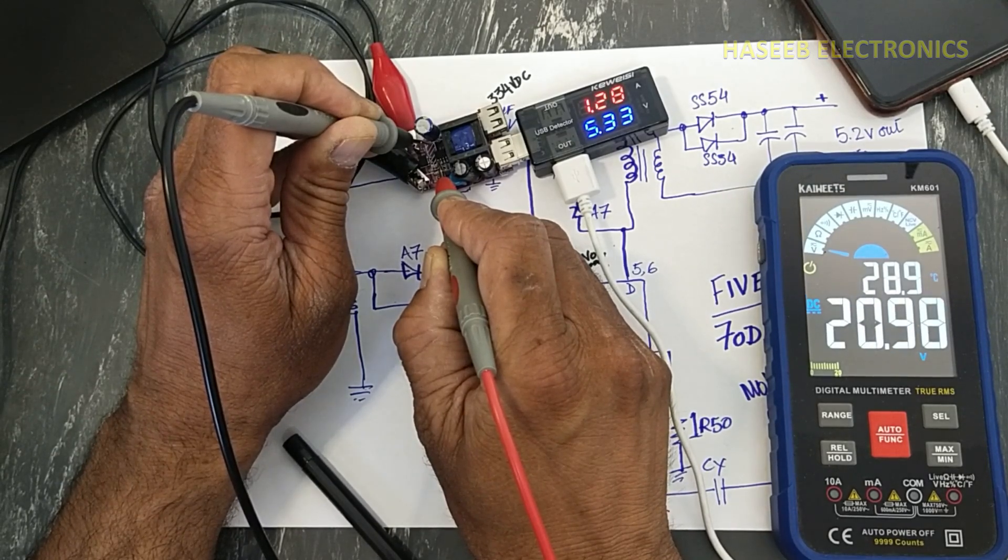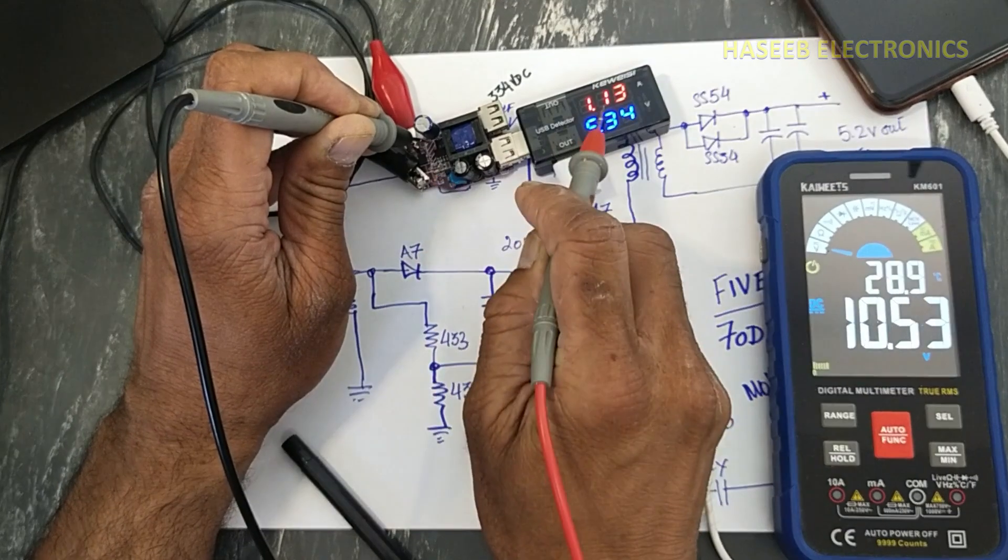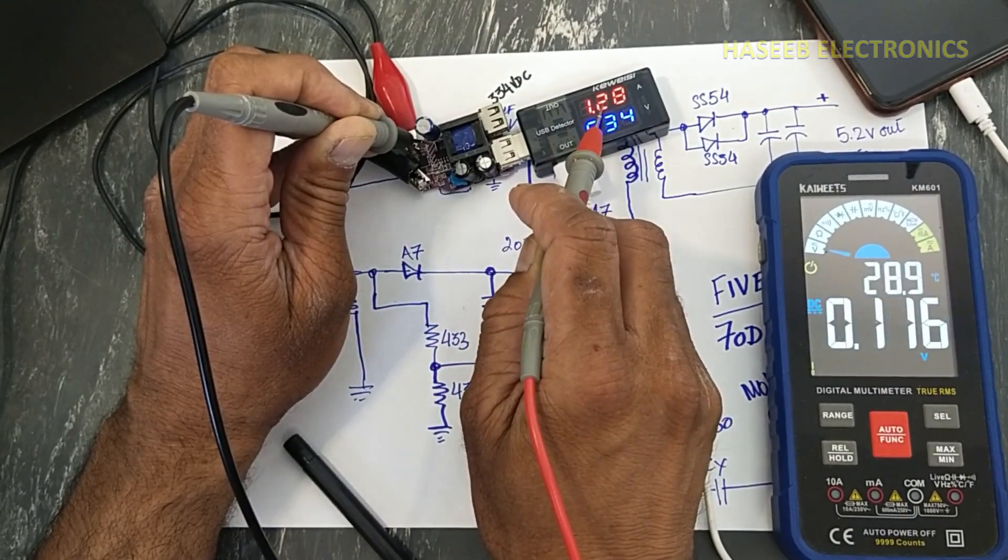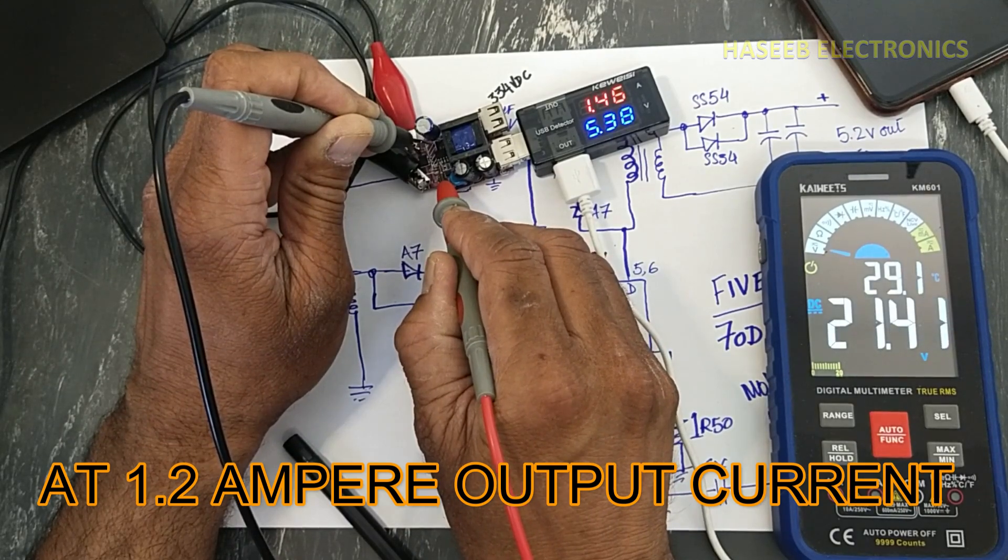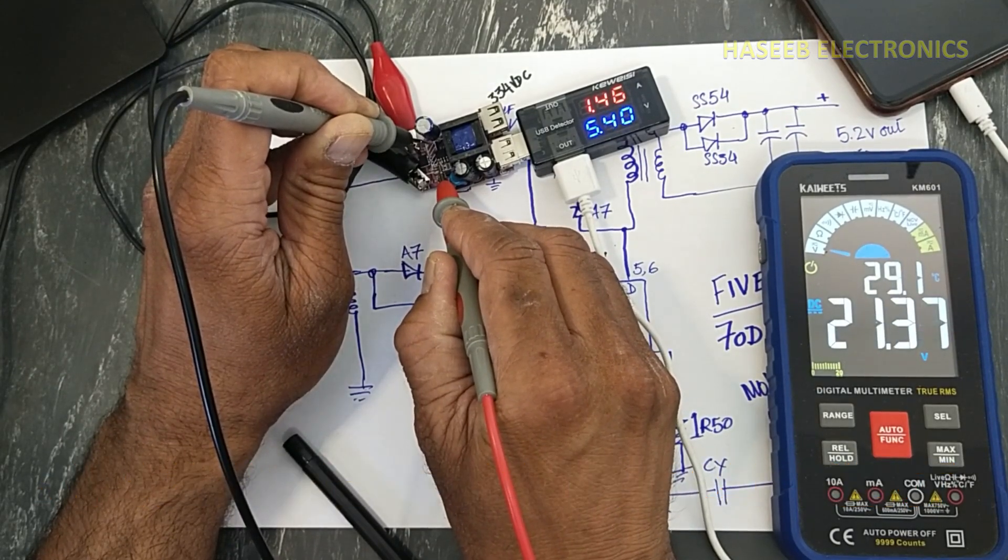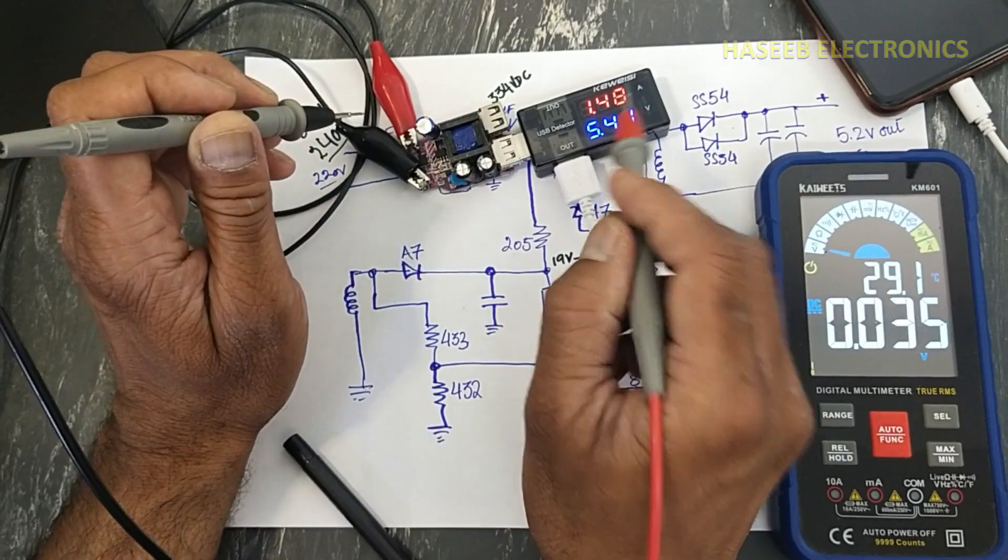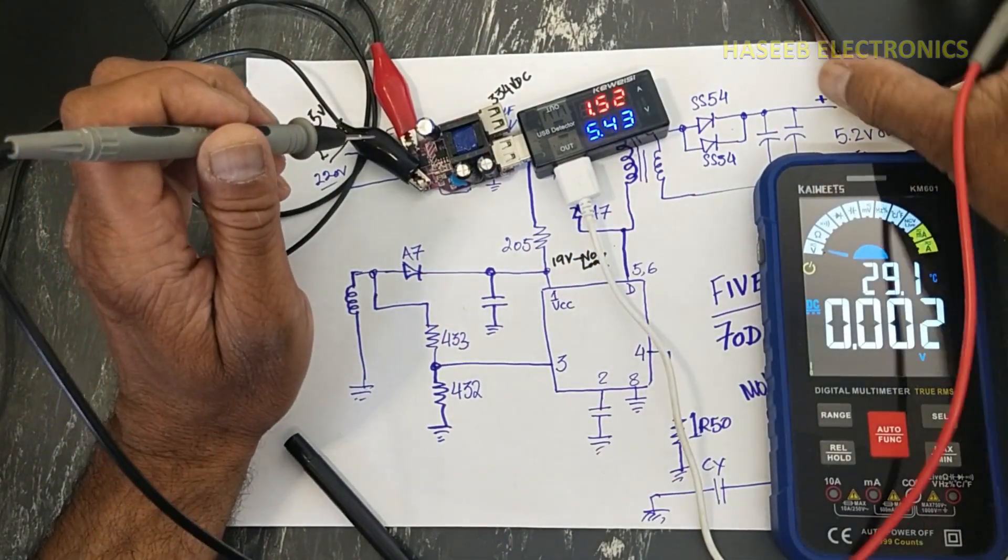21 volts and it is changing with the change in current. We can say it is 21 volts, it is varying as per load.